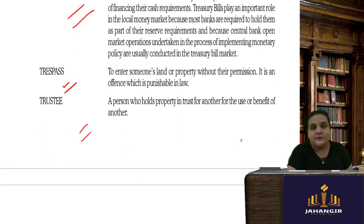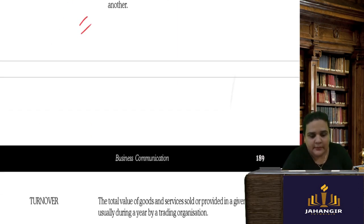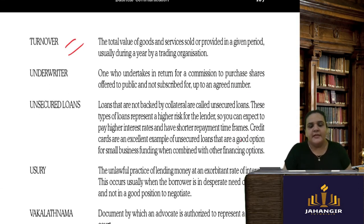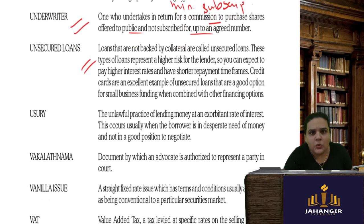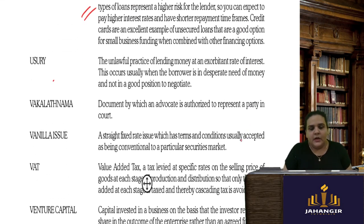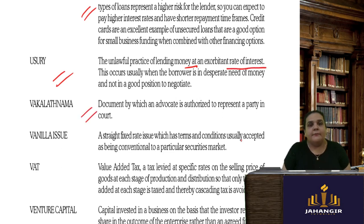Trespass is to enter someone's land or property without their permission. A trustee is a person who holds property in trust for the benefit of others. Turnover is the total amount of sales done over the year. An underwriter undertakes, in return for commission, to purchase shares offered to the public that are not subscribed — as explained in the minimum subscription context. Unsecured loans have no collateral security kept for the loan taken. Usury is the unlawful practice of lending money at an exorbitant rate of interest.